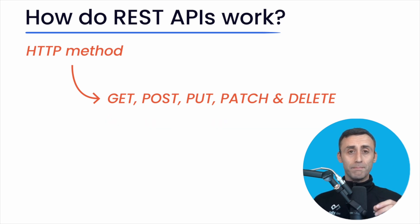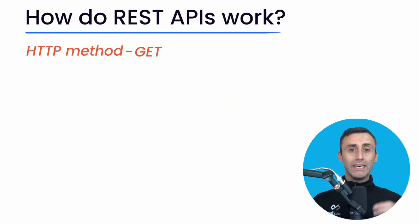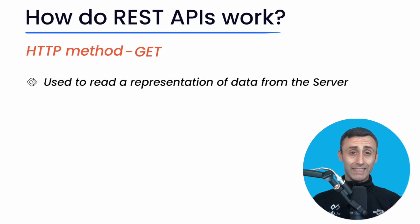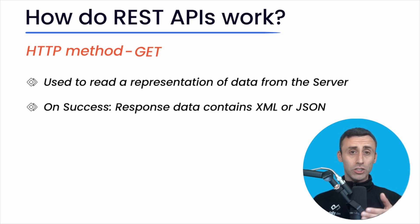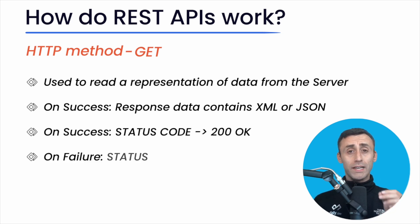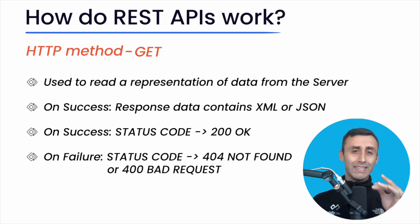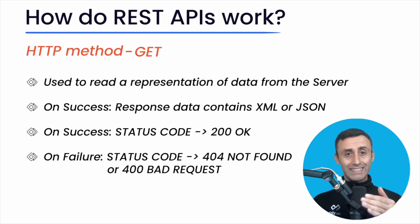Let's understand each of these methods. GET: The HTTP GET method is used to read a representation of data. In the success path, GET returns a representation in XML or JSON and HTTP response code 200 OK. In case of error, it most often returns a 404 Not Found or 400 Bad Request. HTTP status codes are used to understand the status of the request the client sends to the server.